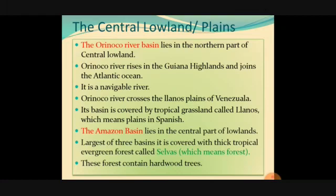Tropical grasslands are called Llanos. The Amazon Basin lies in the central part of the lowland and is the largest of the three basins. Here we can see tropical evergreen forests called Selvas. Selvas contain many hardwood trees because they are in the tropical rainforest region.